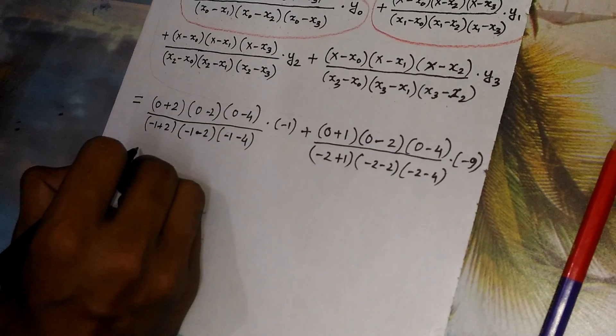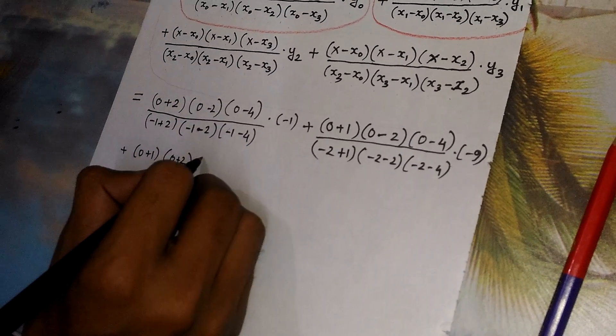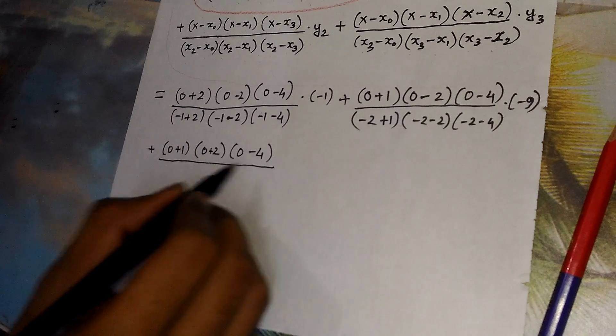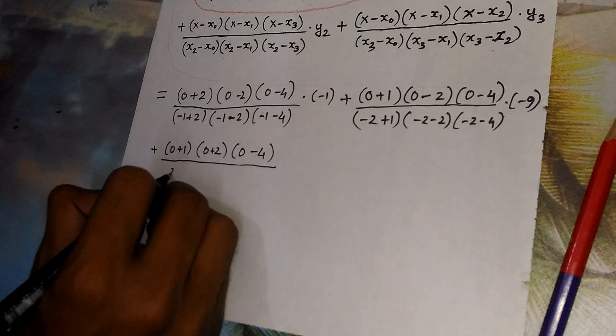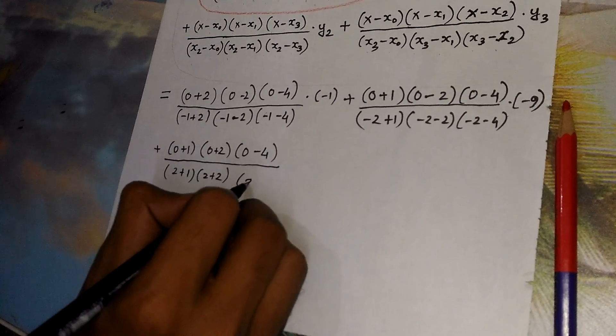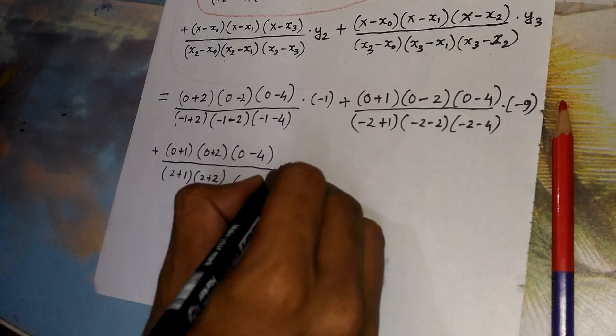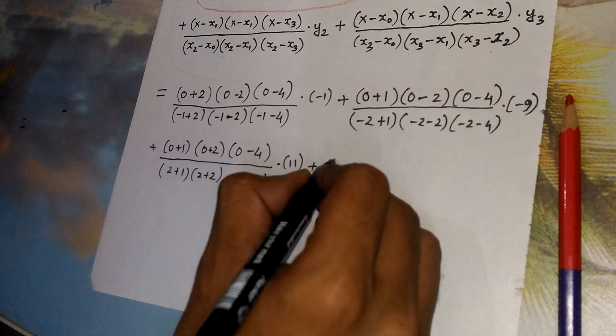Then 0 plus 1, 0 plus 2, 0 minus 4 whole divided by 2 plus 1, 2 plus 2, 2 minus 4 from the formula whole multiplied by 11.